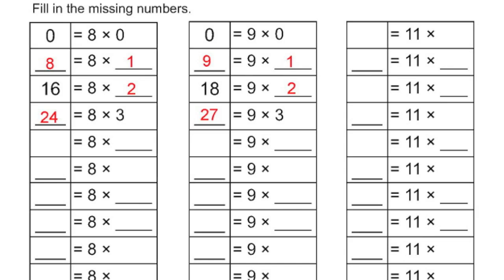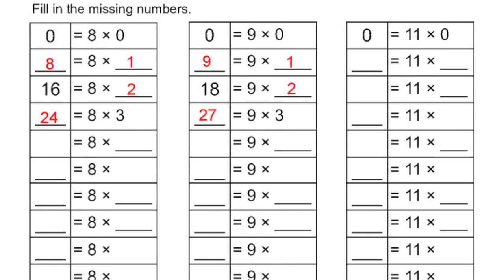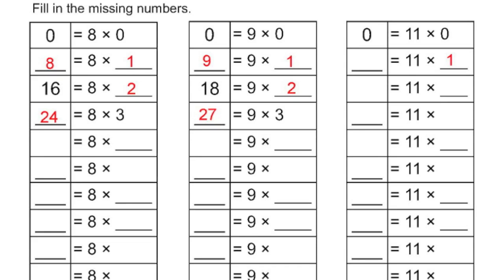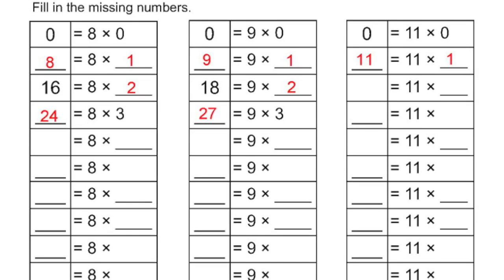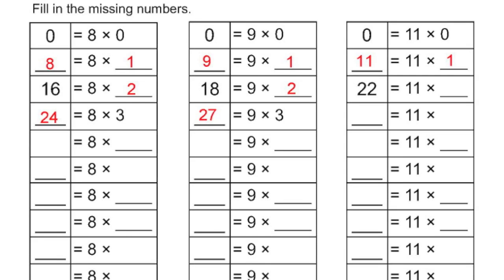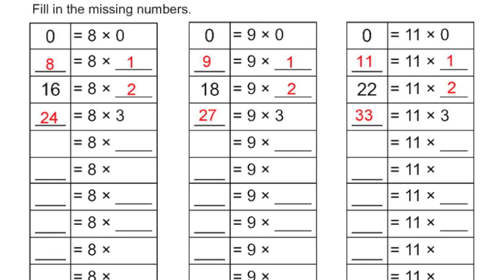Let's move over to the 11s and do that column. 11 times 0 is 0. 11 times 1 is just going to multiply by itself, so it's 11. 22 is 11 times 2. 11 times 3 is 33. It's a similar pattern every single time. The 8s column always goes up by 8, the 9s column by 9, and the 11s column by 11. Nothing is changing there.